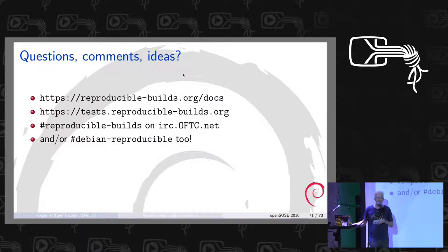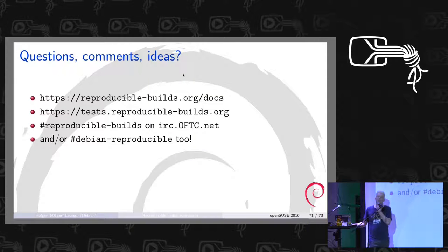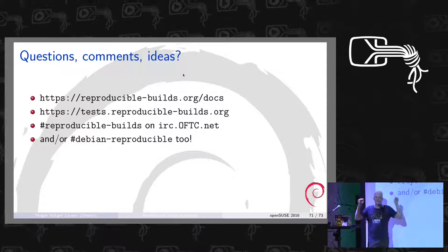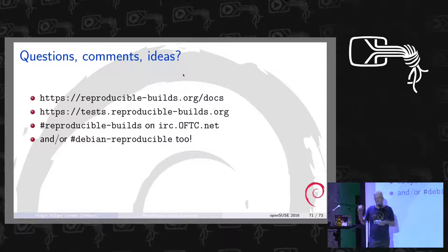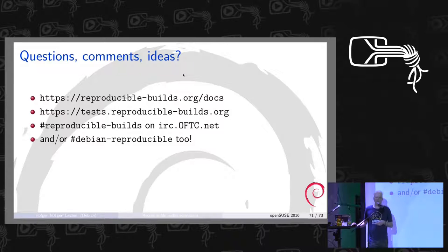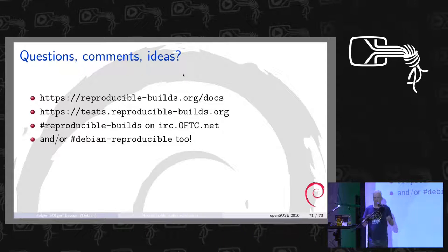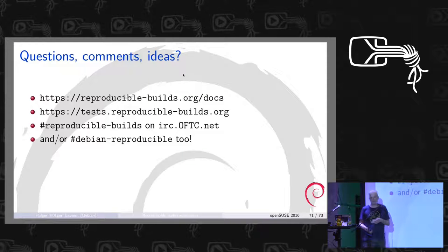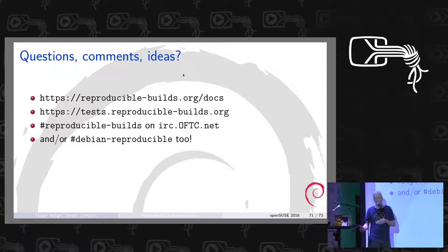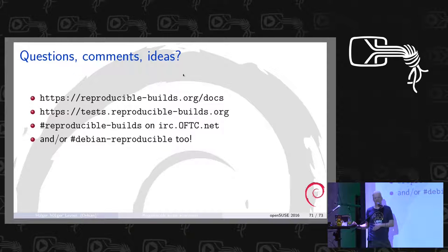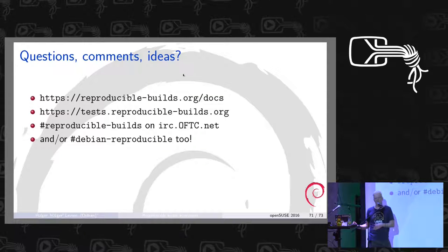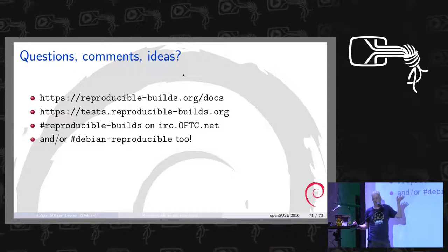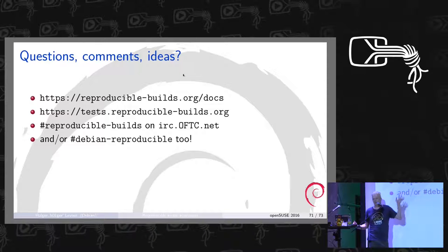Question: how much pushback have we gotten? Not so much. There's a fairly frequent objection: 'but I want my build date, it's important.' But when you explain that the build date isn't meaningful for the user and that the environment is recorded anyway, people usually understand. We haven't had much pushback — rather, we have lots of people joining. We have 1,000 patches accepted, which in Debian context is quite a lot.